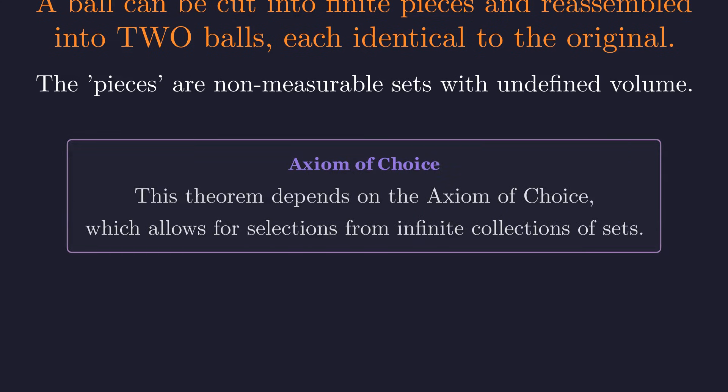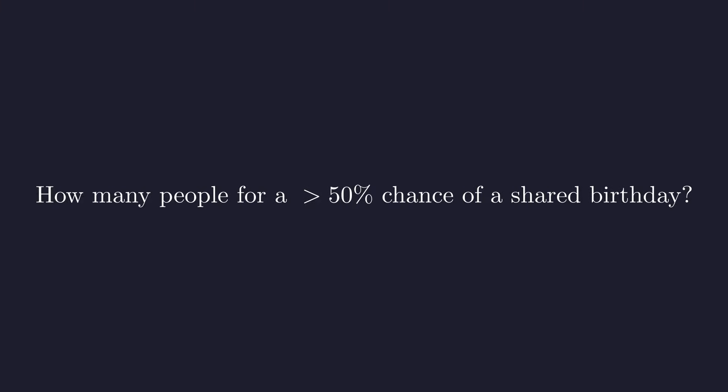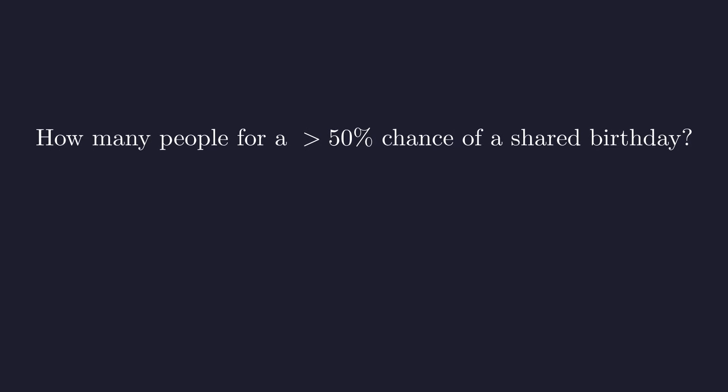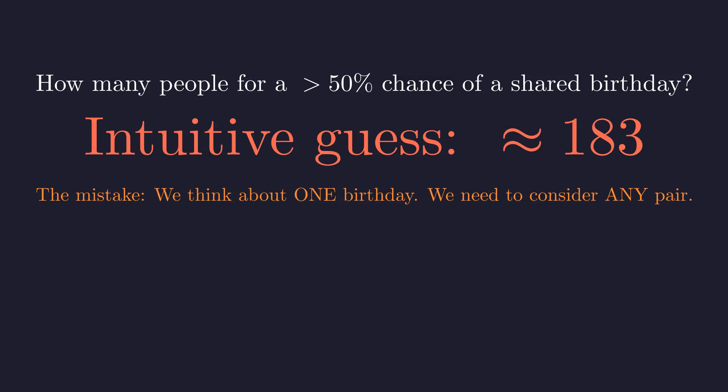This is a famous problem where our intuition about probability leads us astray. How many people do you need in a room for a greater than 50 percent chance that at least two of them share a birthday? Most people's intuition suggests about half the number of days in a year. This is wrong. The mistake is thinking about matching your birthday. We need to consider any pair of people matching.